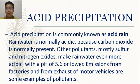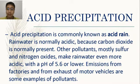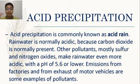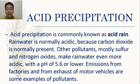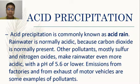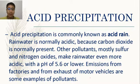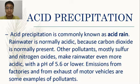Acid precipitation, commonly known as acid rain: rainwater is normally slightly acidic because carbon dioxide is normally present in the air. However, other pollutants like sulfur and nitrogen oxides — from burning fuel in motor vehicles and factories — make rainwater even more acidic, with a pH of 5.6 or lower.